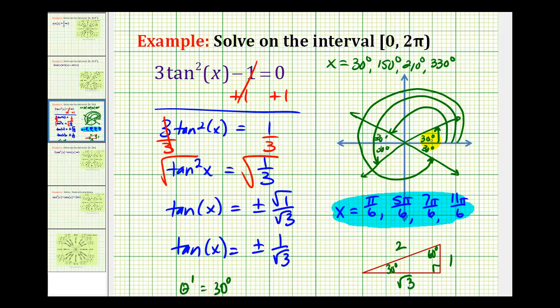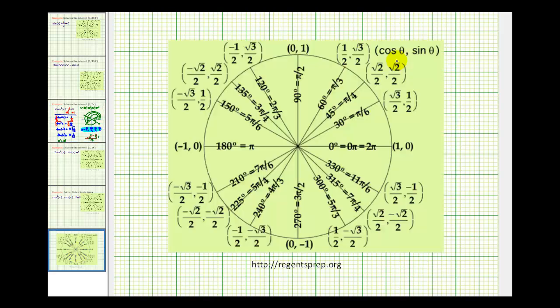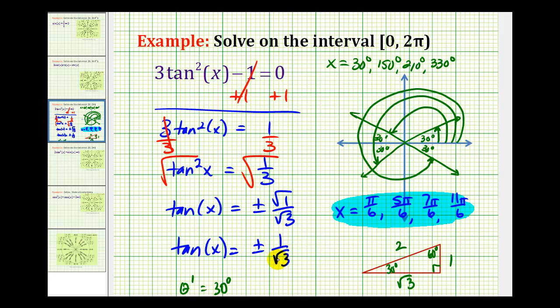Now we could also have used the unit circle to determine when the tangent function is equal to plus or minus 1 divided by square root of 3, but it's a little bit more challenging than for cosine and sine because tangent θ would be equal to y divided by x. We'd be looking at quotients of fractions to determine where the tangent function is equal to plus or minus 1 over square root of 3. So it's always important to be familiar with your reference triangles. Here we have the 30, 60, 90, and of course there's also the 45, 45, 90.